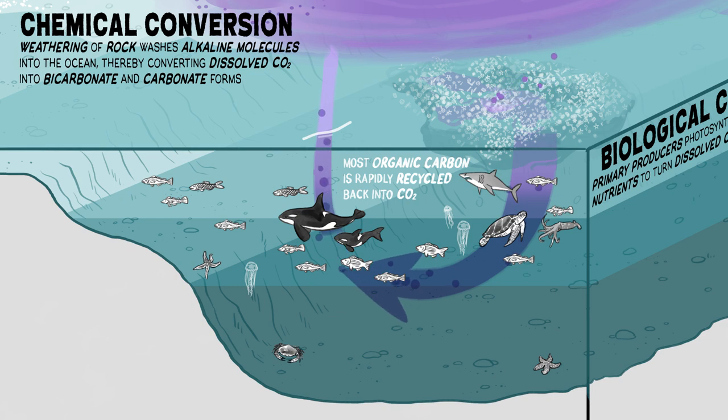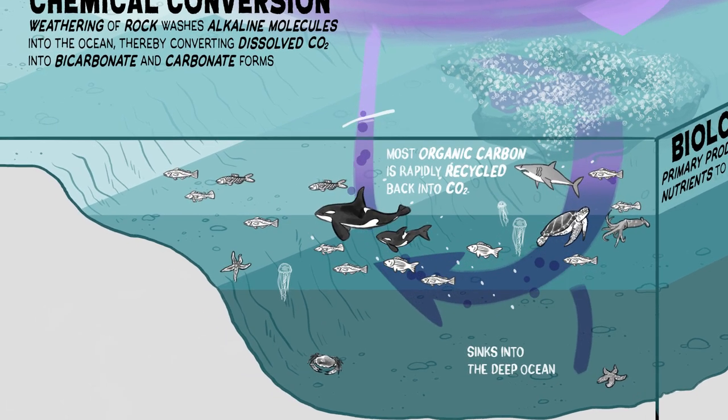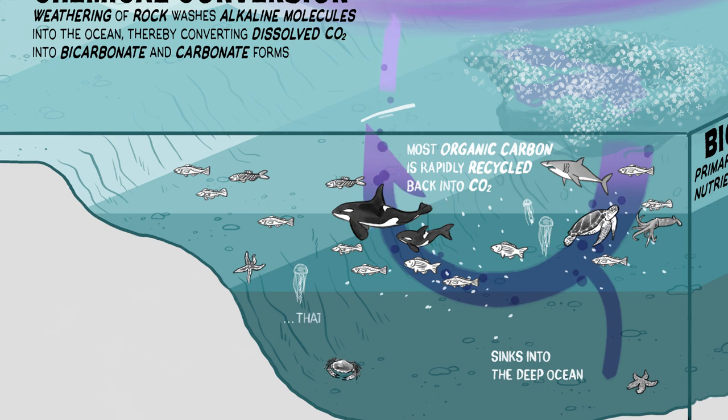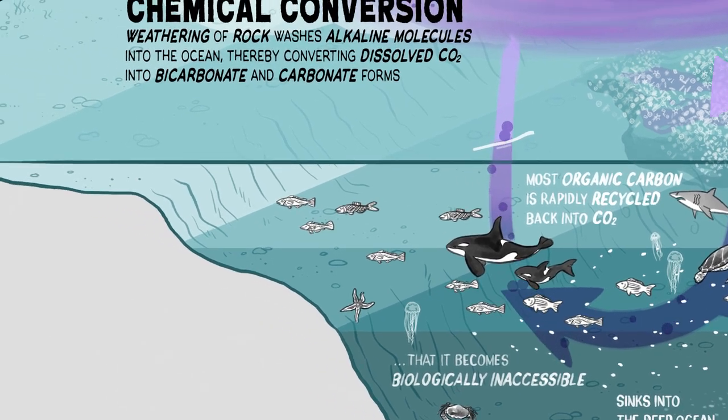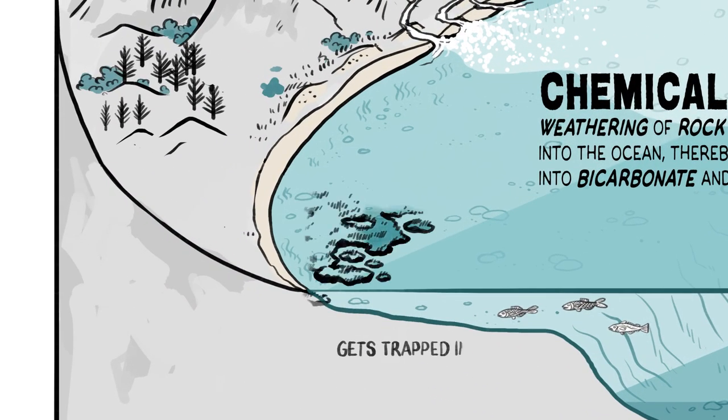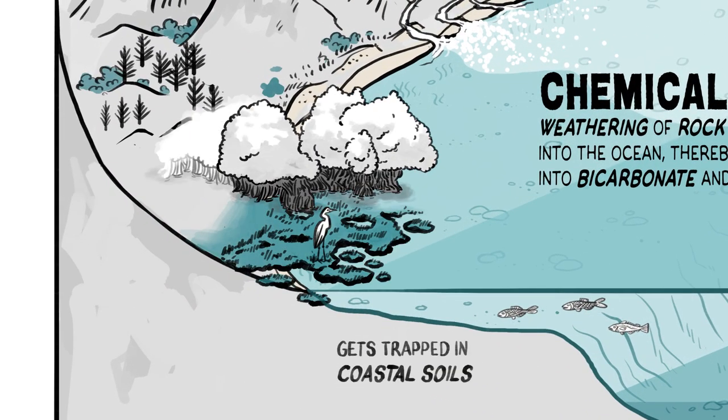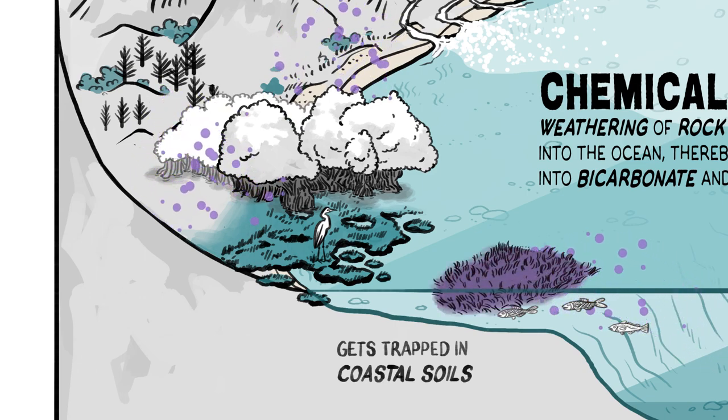However, a small fraction of organic carbon escapes the food web and is sequestered in the ocean. This includes organic matter that sinks into the deep ocean or is structurally so complex that it becomes inaccessible to microbes and is sequestered in the ocean for thousands of years. Organic carbon also gets trapped in coastal soils by salt marshes, mangrove forests and seagrass meadows.